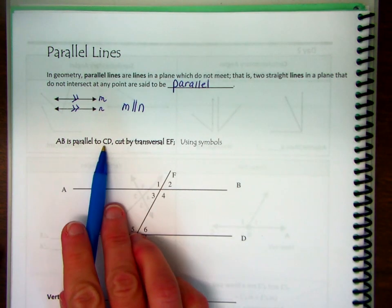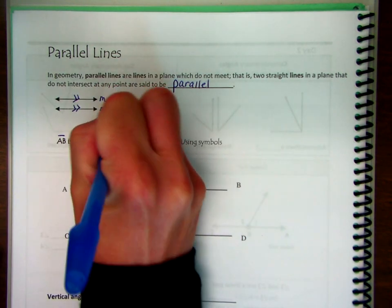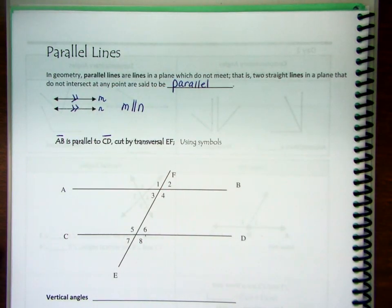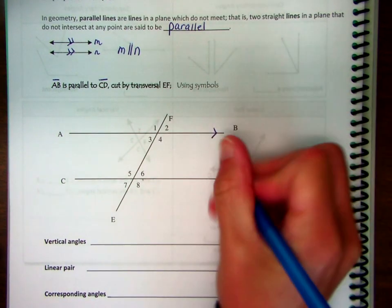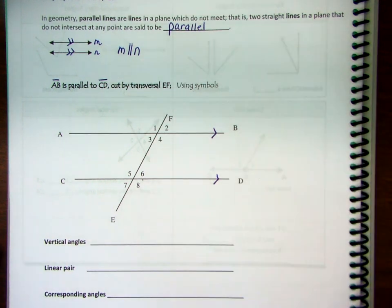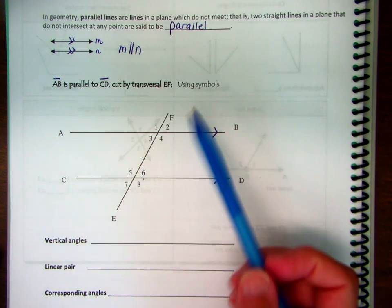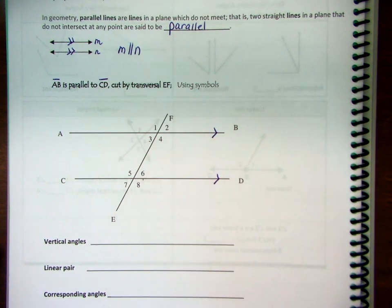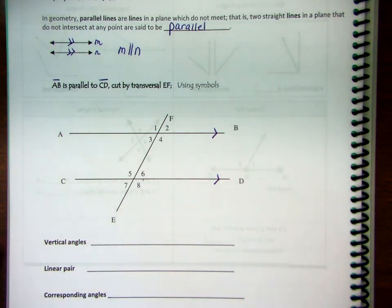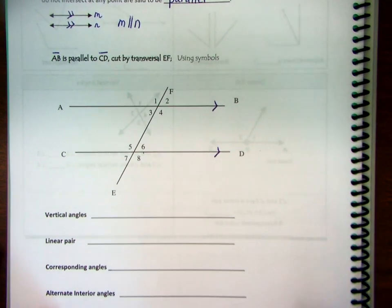AB is parallel to CD — we should have line segment notation above each. AB is this horizontal line, parallel to CD. Our transversal is EF. When the transversal intersects the pair of parallel lines, we have some angles that are congruent and some that are supplementary. Let's take a look at angles one, two, three, and four, using what we talked about with vertical angles and linear pairs.